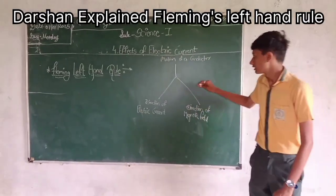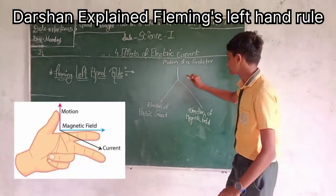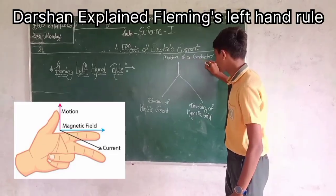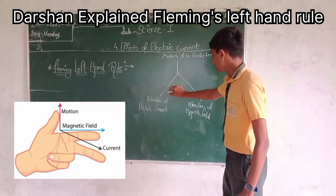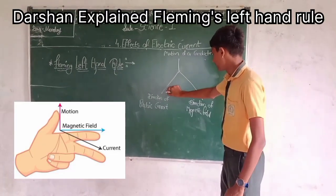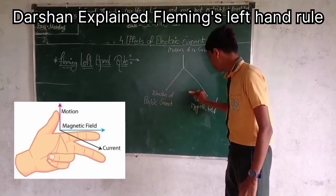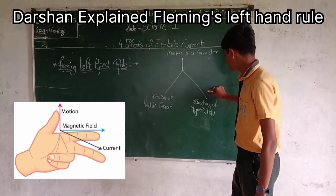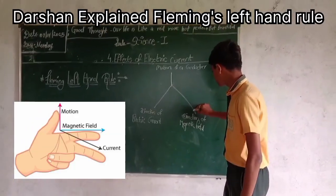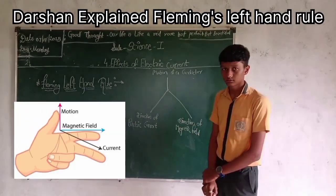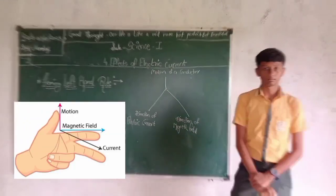This is our thumb, which shows the motion of the conductor. And this is our middle finger, which shows the direction of electric current. And this is the forefinger, which shows the direction of the magnetic field. Very good.